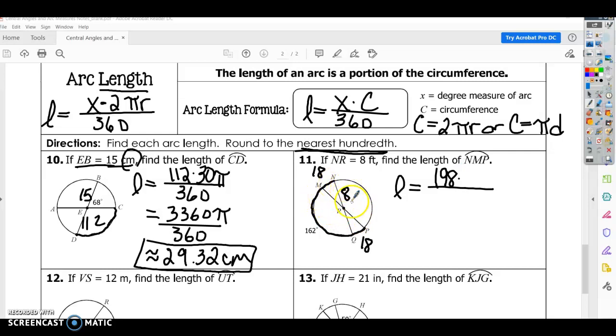So we know this is 18. Sorry, the degree is 18. We know the radius is 8, so we know all the way across is twice that. So the diameter is twice the radius. So the diameter is 16, not 18. So we have 16 pi, and then we're going to divide that by 360.